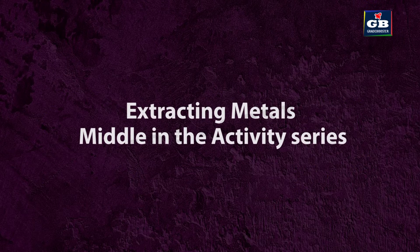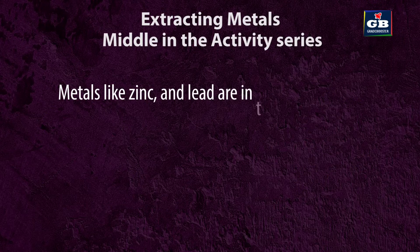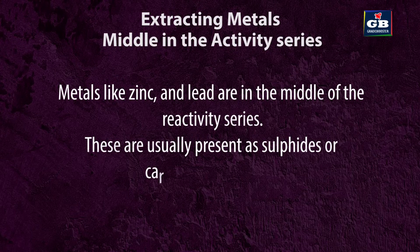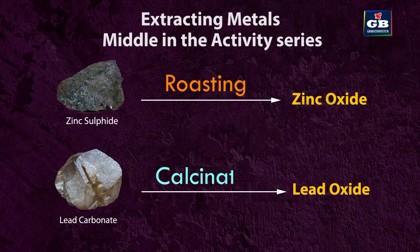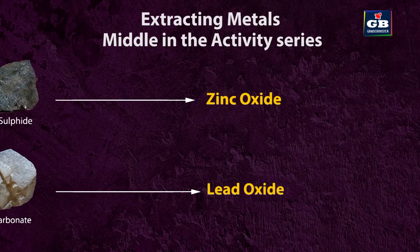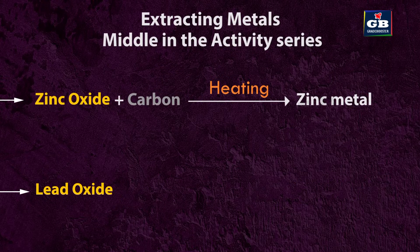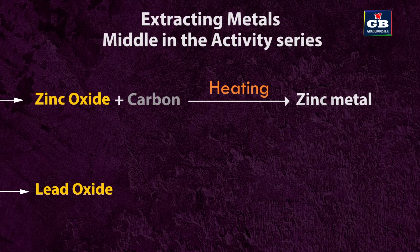Extracting metals in the middle of the activity series: Metals like zinc and lead are in the middle of the reactivity series and are usually present as sulfides or carbonates in nature. They are first converted to oxides — sulfides are converted by roasting and carbonates by calcination. The metal oxides are then reduced to the corresponding metals using suitable reducing agents such as carbon. For example, when zinc oxide is heated with carbon, it is reduced to metallic zinc: ZnO + C → Zn + CO.